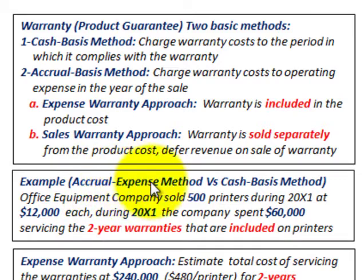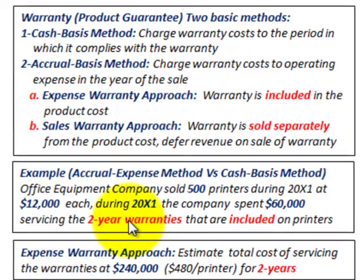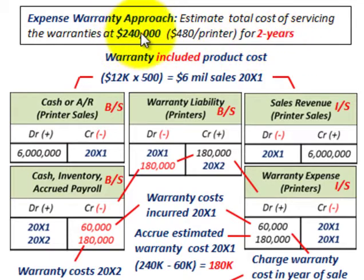We're going to compare the accrual expense method to the cash basis method using an example. An office equipment company sold 500 printers during 20x1 at a sales price of $12,000 each. During 20x1, the company spent $60,000 servicing a two-year warranty included on these printers. The estimated total cost of servicing the warranties for that two-year period is $240,000, or $480 per printer.